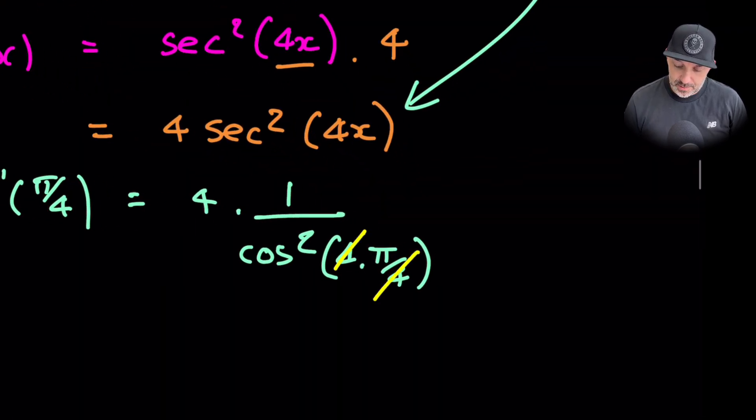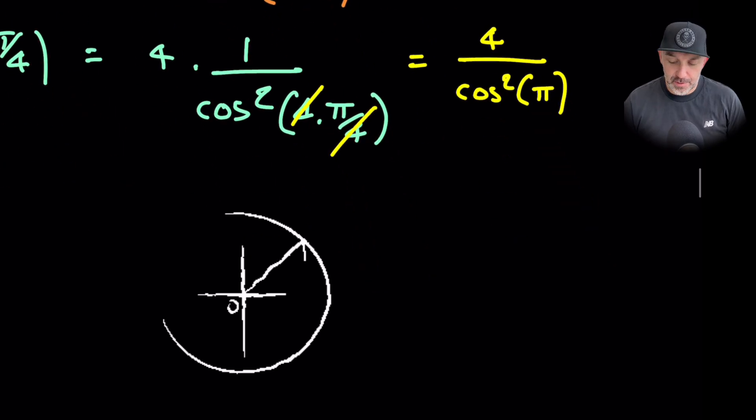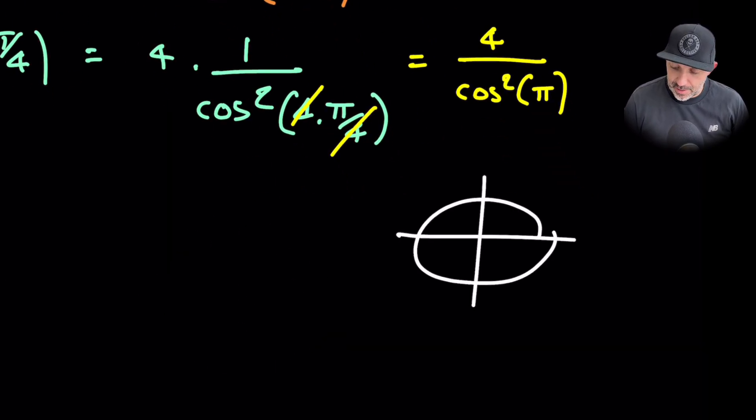Making that nice and simple. So this is 4 over cos squared pi. Now if we just use the unit circle on this little part here to remind us that as you rotate pi around the unit circle, so that is 180 degrees, you'll be on the left-hand side here.